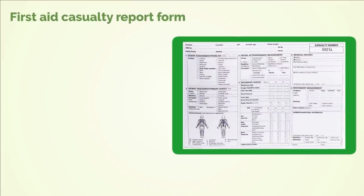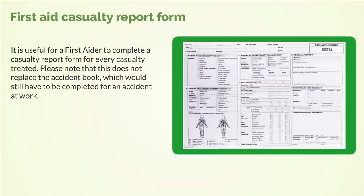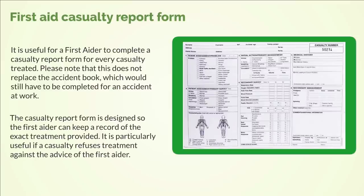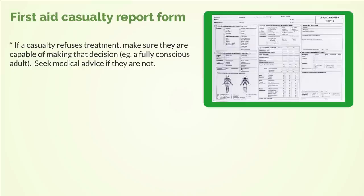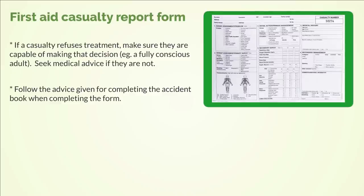First Aid Casualty Report Form. It is useful for a first aider to complete a Casualty Report Form for every casualty treated. Please note, this does not replace the accident book, which would still have to be completed for an accident at work. The Casualty Report Form is designed so that the first aider can keep a record of the exact treatment provided. It is particularly useful if a casualty refuses treatment against the advice of the first aider. If a casualty refuses treatment, make sure they are capable of making that decision — for example, a fully conscious adult. Seek medical advice if they are not. Follow the advice given for completing the accident book when completing the form.